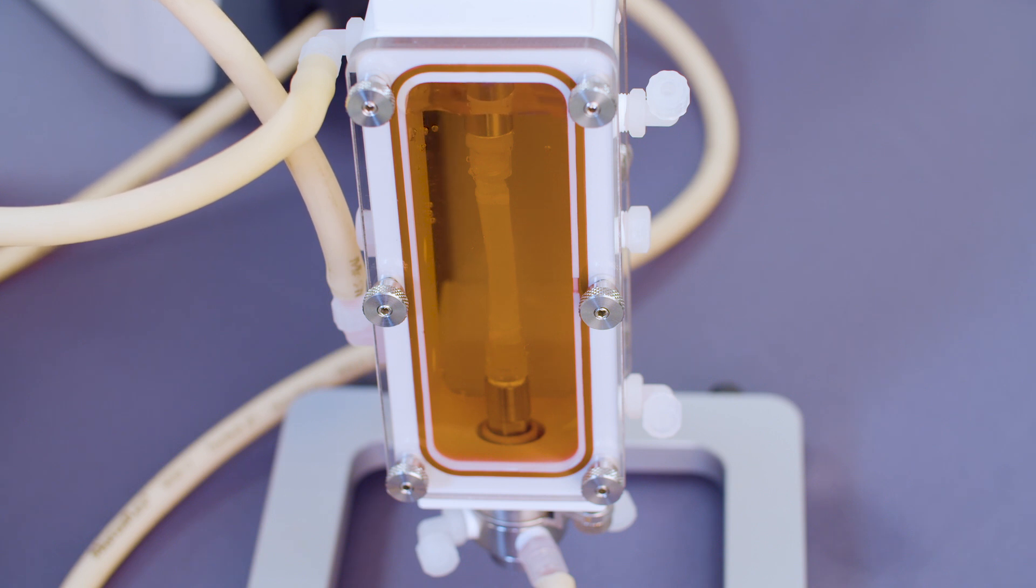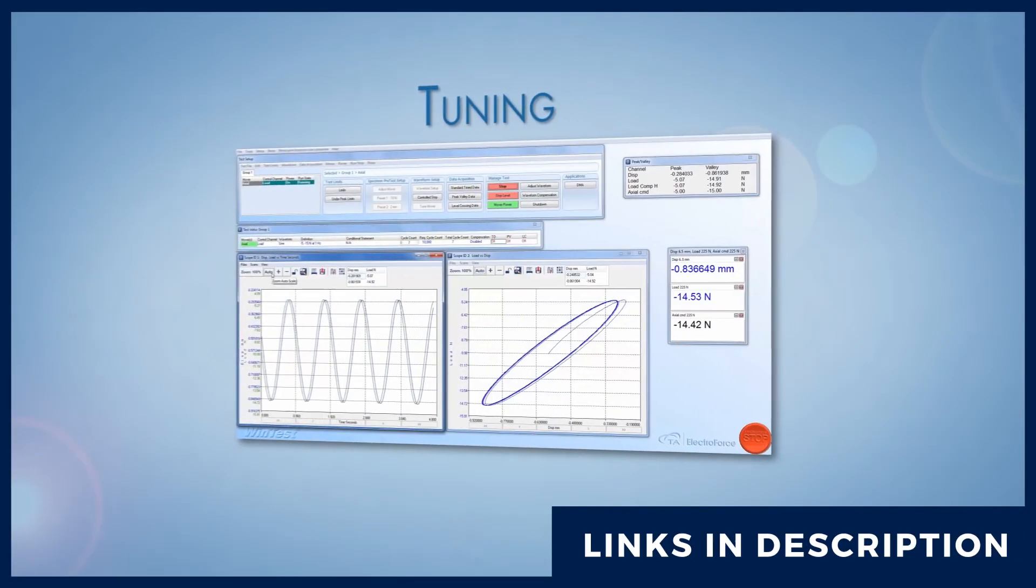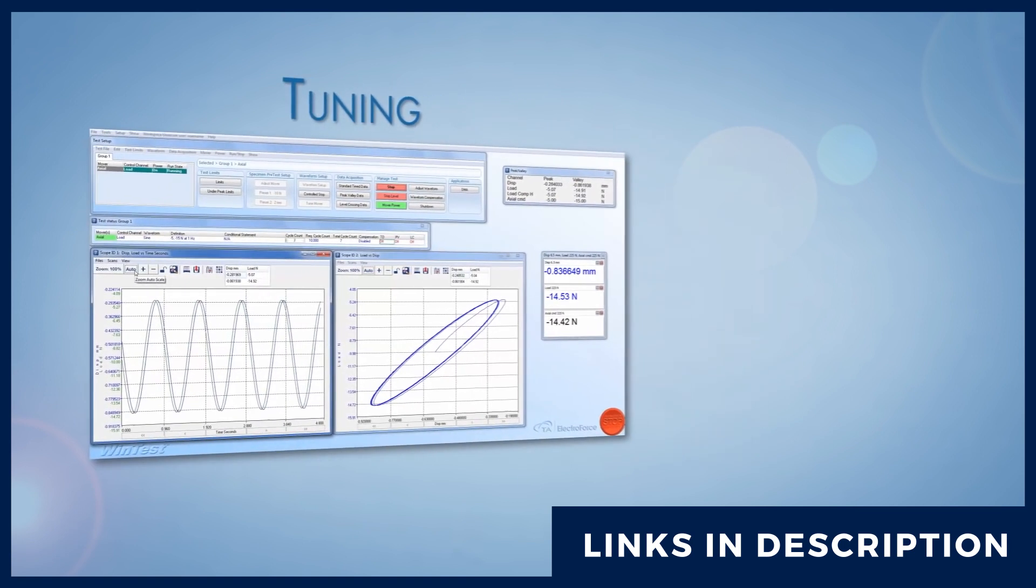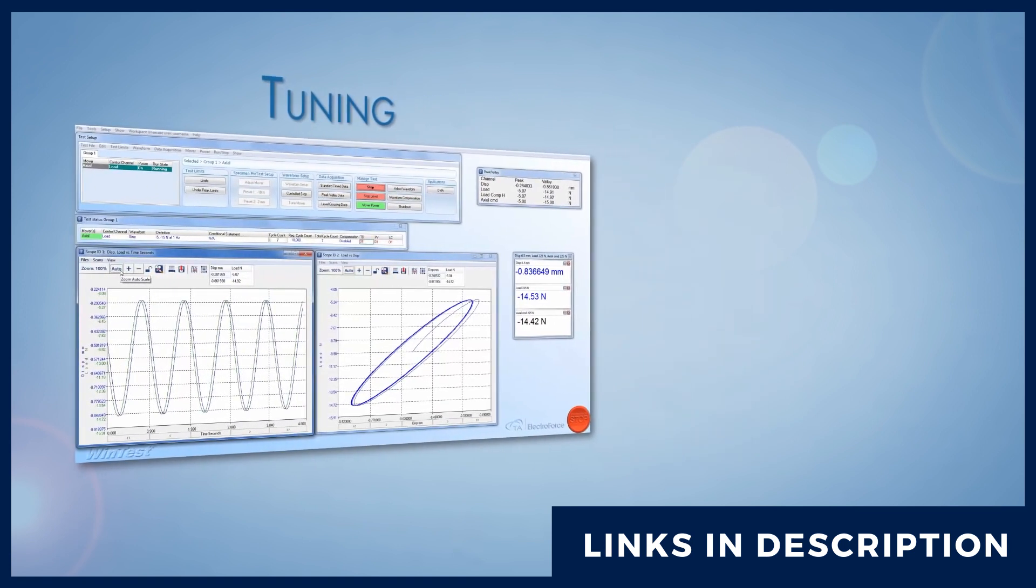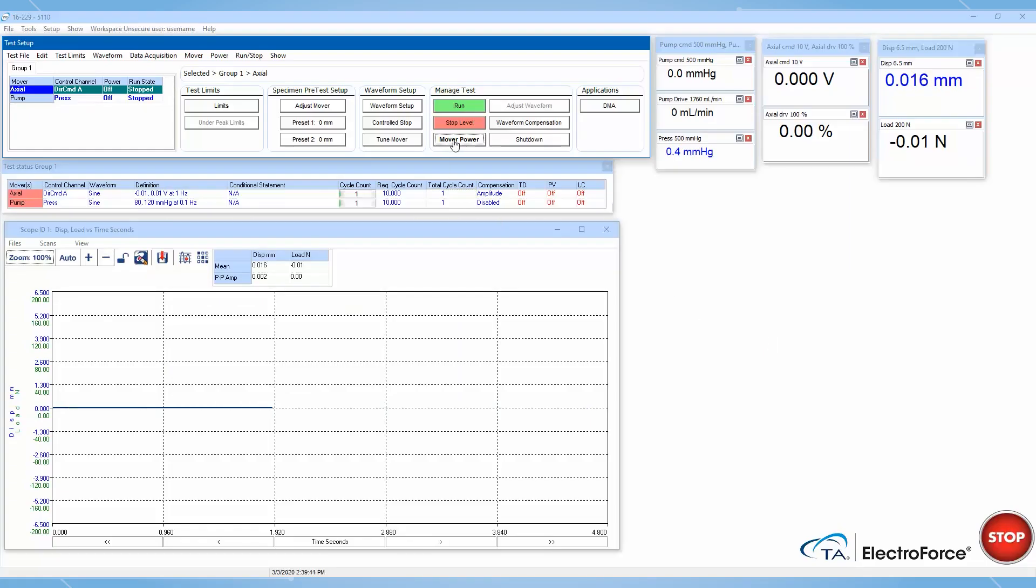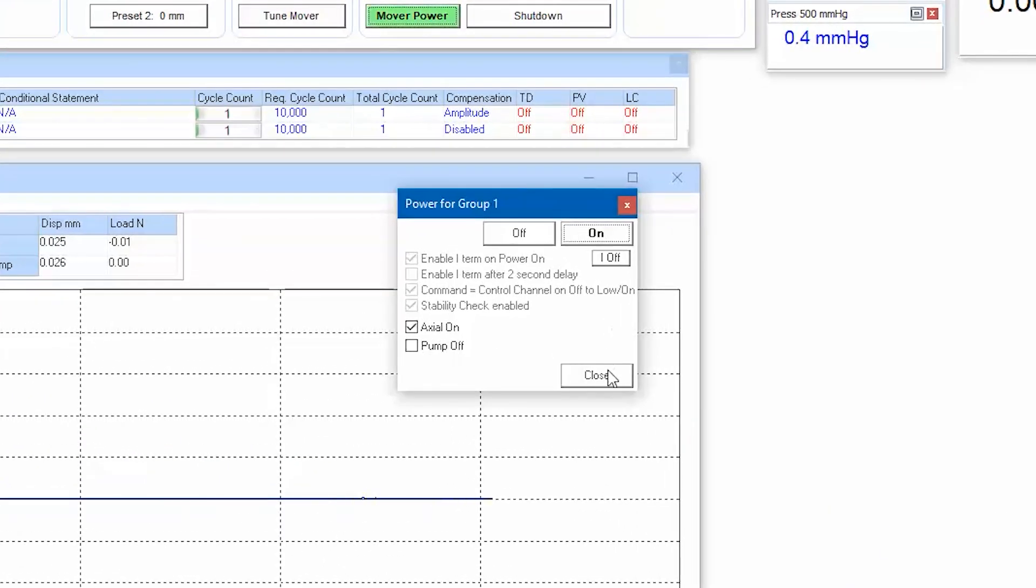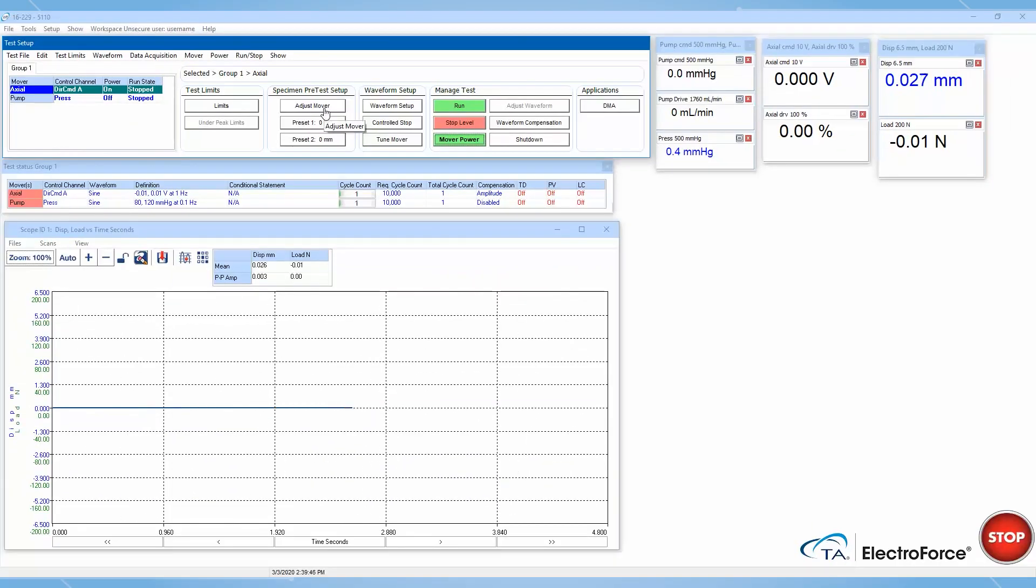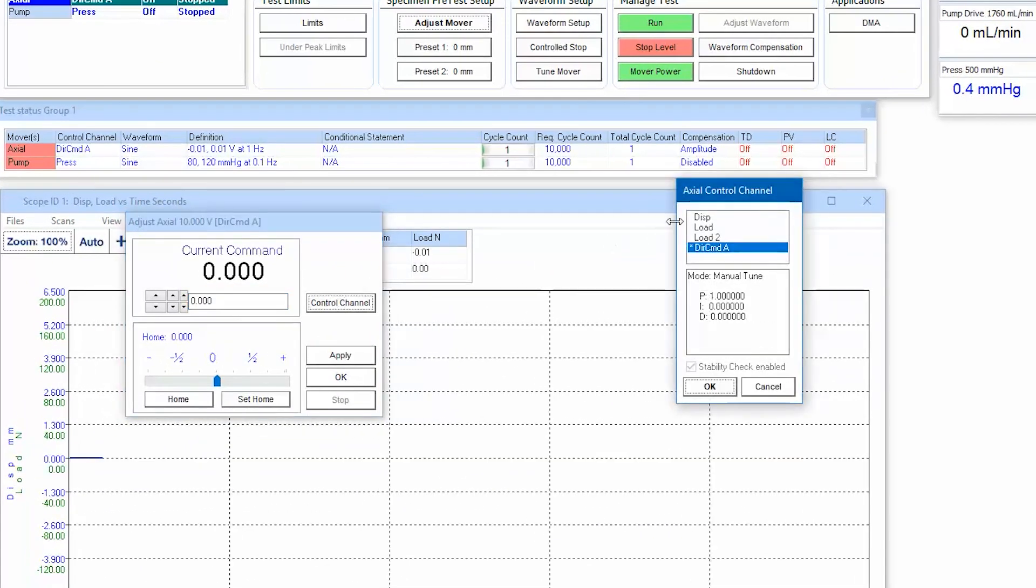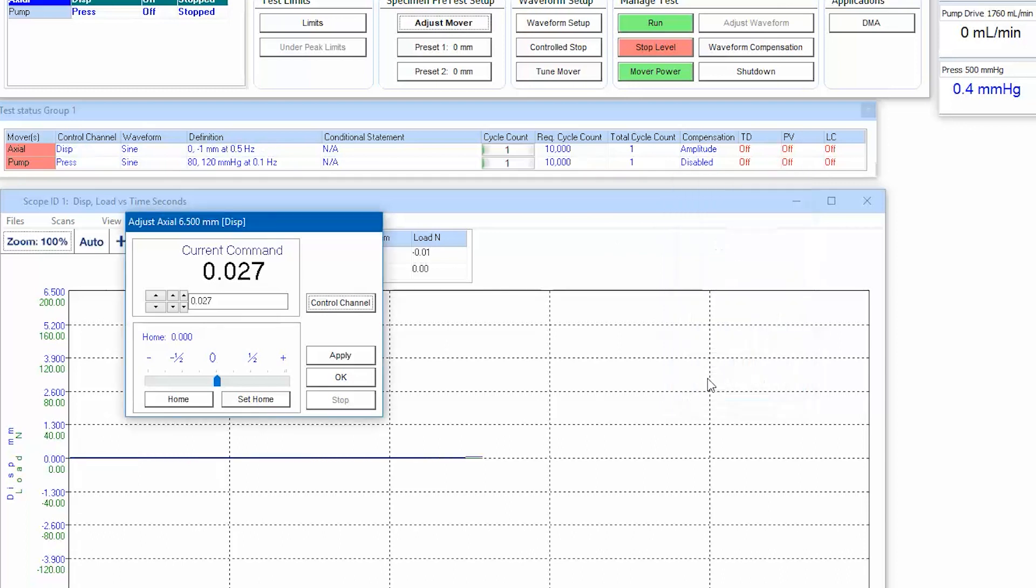Prior to mounting the chamber on the biodynamic load frame, we need to tune the instrument in displacement control. For more information about tuning, watch the tech tip on TuneIQ or manual tuning. Turn the axial mover on and switch to displacement control. Set the position to 0 mm.